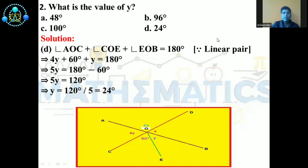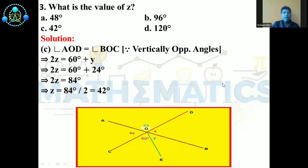Now we find the value of Z. Again there are four options: A: 48°, B: 96°, C: 42°, D: 120°. The correct answer is C. Because angle AOD equals angle BOC — they are vertically opposite angles. From the figure, angle AOD equals 2Z, and angle BOC equals 60° plus Y°.